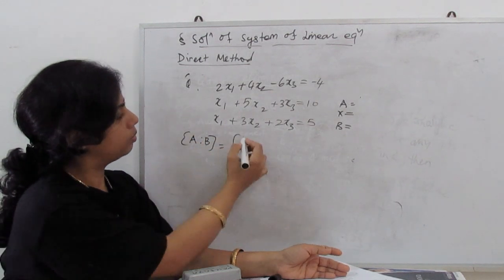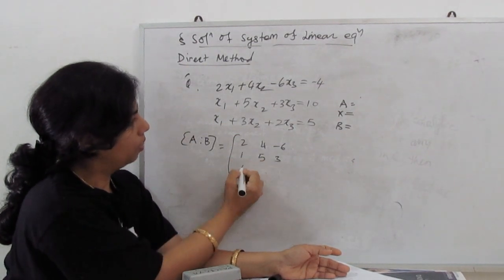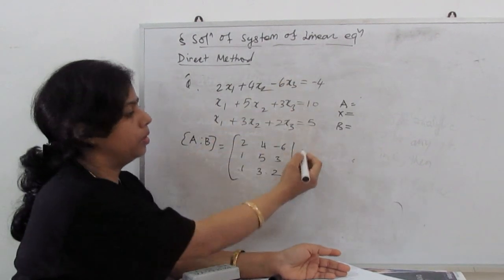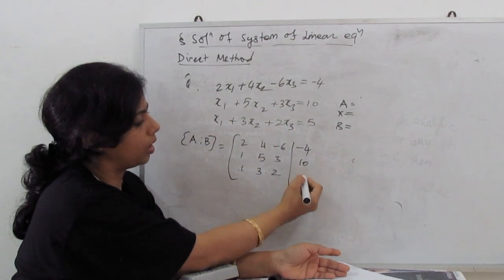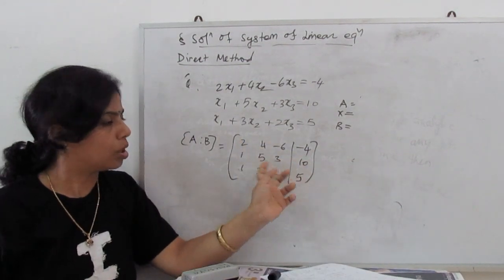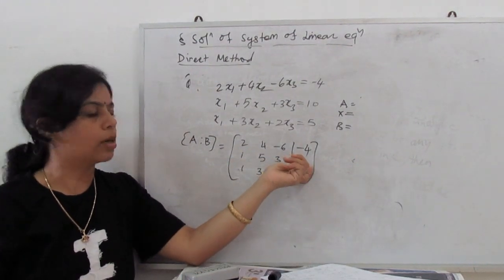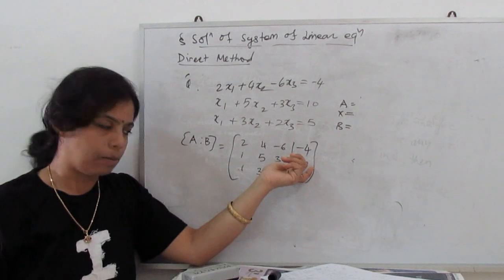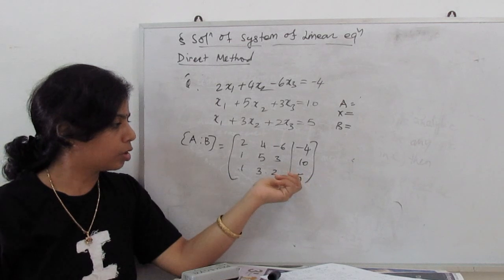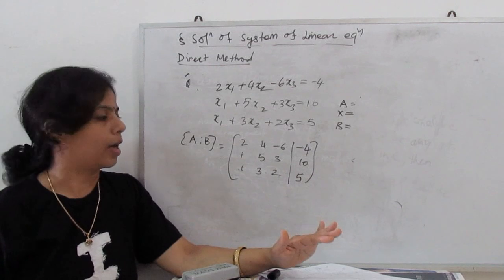The augmented arrangement [A | B] is: [2, 4, -6 | -4], [1, 5, 3 | 10], [1, 3, 2 | 5]. Remember: there are three rows, and whatever row operation we apply to A, we must apply the same operation to the corresponding element in B. Now we reduce this into an upper triangular matrix by making all elements below the diagonal equal to zero.